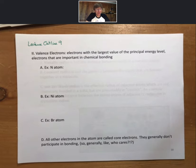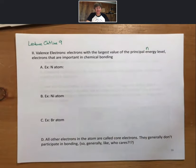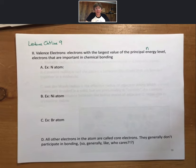Roman numeral 2 is about valence electrons. Those are electrons with the largest value of the principal energy level, where of course that's n. Electrons that are important in chemical bonding, as we will see, and this is all building to understanding where the electrons are, and then next lecture outline we'll talk about how to incorporate electrons into bonds.